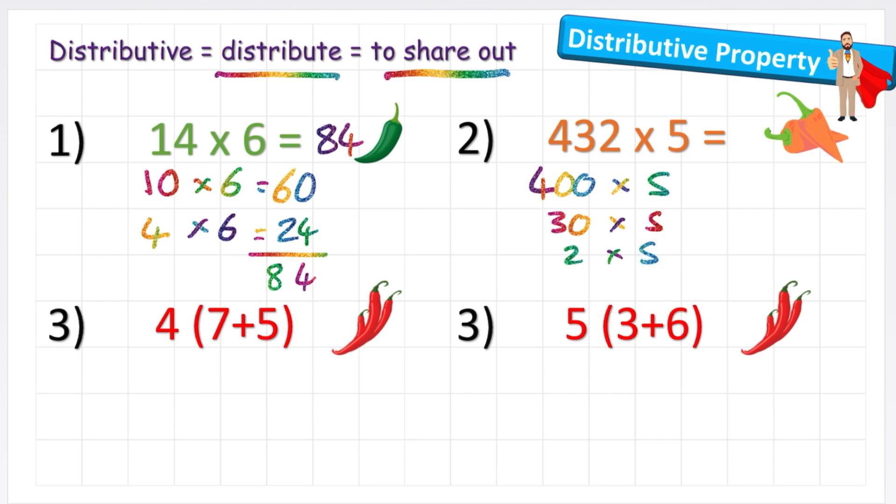400 times 5 is 2,000. 30 times 5 is 150. And 2 times 5 is 10. And now these numbers are quite easy to add up in my head. I can just add the 2,000, the 150, and the 10 to get an answer of 2,160.